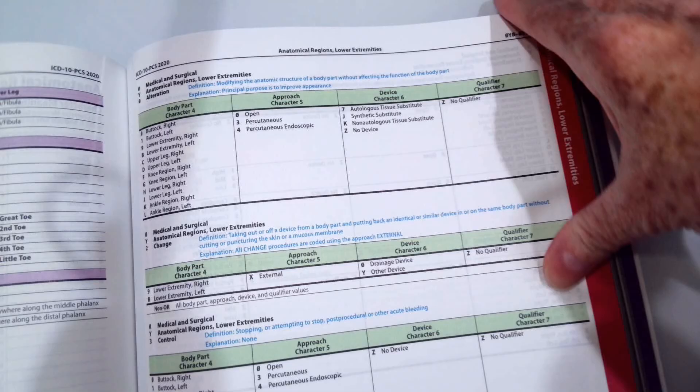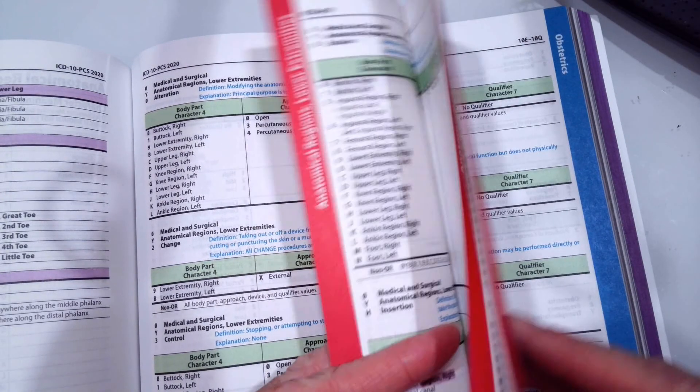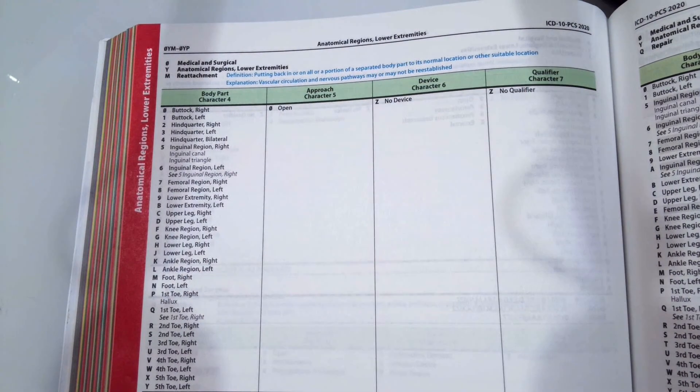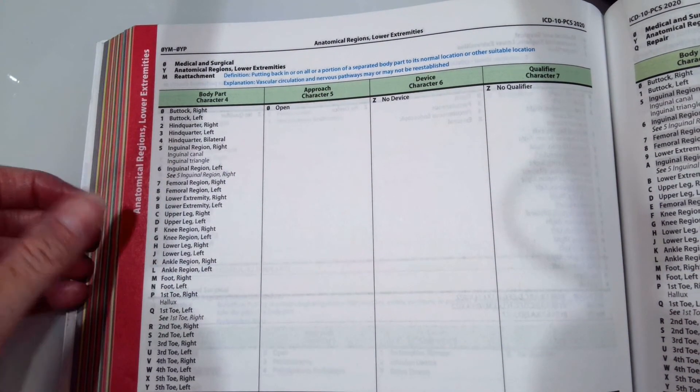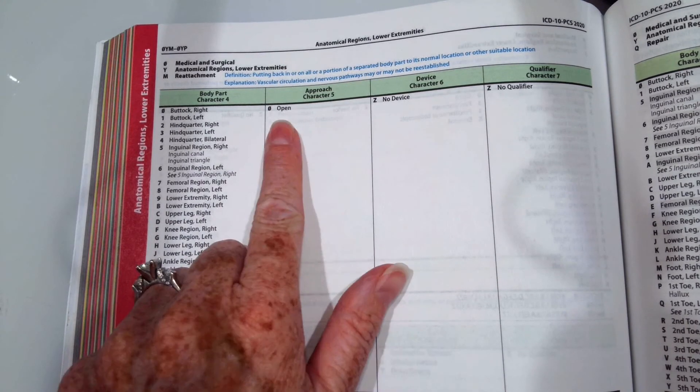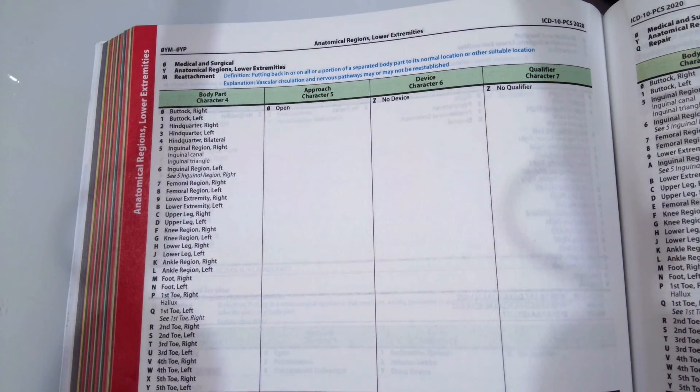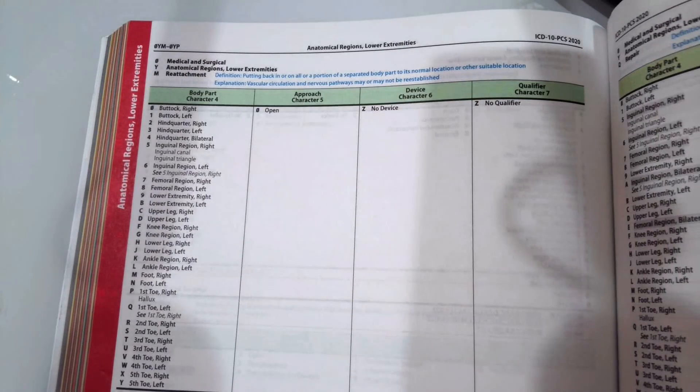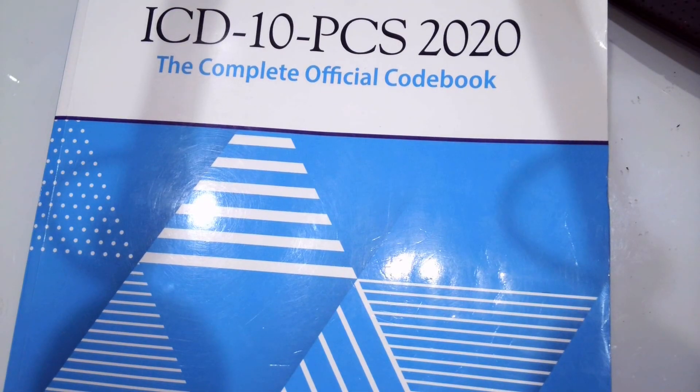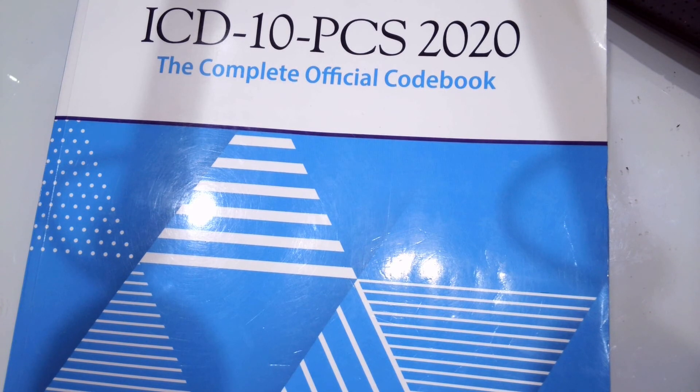Let's go ahead to the table and just make sure that that matches. 0YM. Again, the definition of reattachment is right there if you're unsure for your root operation. 0YMQ for our first toe left. And then it had to be open, no device, no qualifier. I hope you found this video helpful and were able to find that amputation and reattachment code without any assistance.